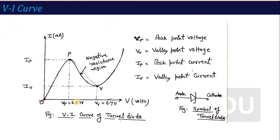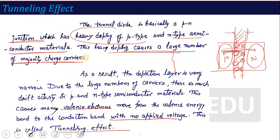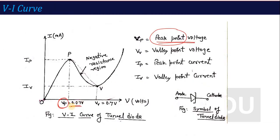Once the voltage reaches VP, which is called the peak point voltage, the tunneling action starts decreasing. The tunneling effect is no longer increasing — most of the electrons and holes are recombined and the tunneling action starts decreasing. So as you increase the voltage, the current decreases. This particular region is called the negative resistance region, and it is the main property of tunnel diode.